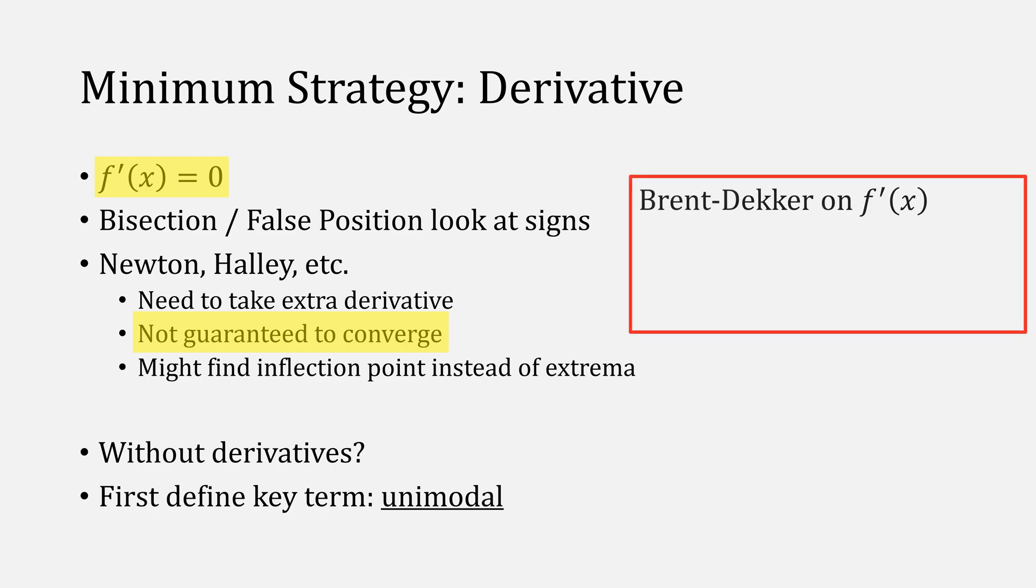You could instead apply Brent-Dekker on that function, or Newton-Bisection-Hybrid. It does require you now to take an extra derivative, but you could always swap out Steffensen's method if you wanted to go this route.